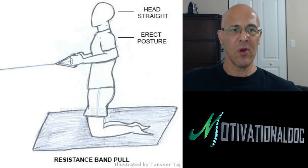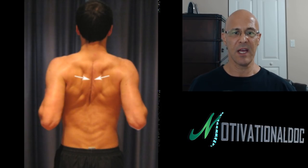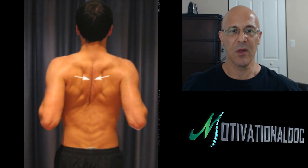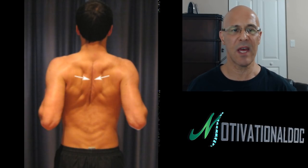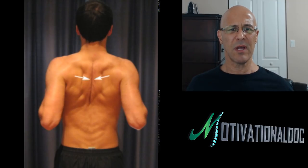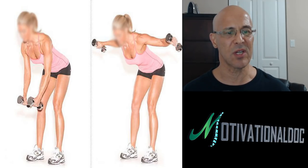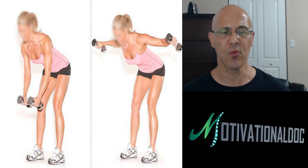Anytime you do a pulling movement, you're strengthening those rhomboids between the shoulder blades. Without any equipment, just take your arms back and squeeze them together — pinching those shoulder blades, pushing the elbows back — do those sets every day. They make a big difference and you'll be surprised how much straighter you'll sit.